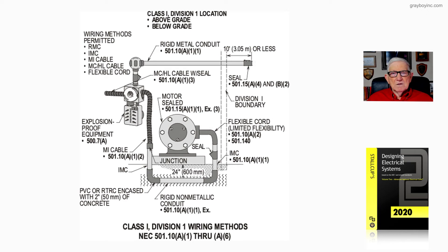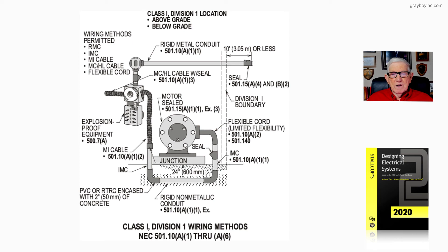These are the wiring methods. The most-used wiring method seen today is the MCHL cable, and you don't need a seal — it uses a fitting listed to seal around the core of the cable and the inside conductors. That MCHL cable is used quite a bit, with rigid now used mainly where needed for physical protection. Figure 21-21 illustrates the wiring methods used in a Class 1, Division 1 location per NEC 501.10A1 through A7.